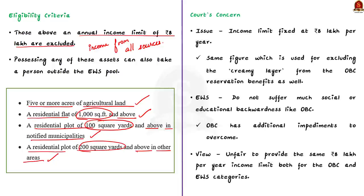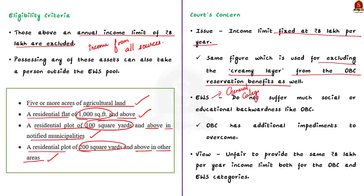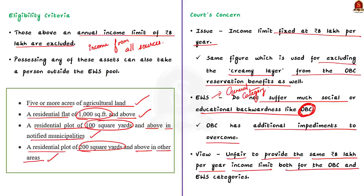The main concern of the Supreme Court is the income limit fixed at 8 lakh per year. The concern is that the cap of 8 lakh per year is the same figure used for excluding the creamy layer from the OBC reservation benefits as well. The EWS are a part of the general category, and the people in the general category to whom the EWS quota is applicable do not suffer as much social or educational backwardness as those classified as OBC — OBC has additional impediments to overcome. When viewed in this angle, the court feels it would be unfair to provide the same 8 lakh per year income limit for both the OBC and EWS categories, which is why there are talks to revisit the eligibility criteria.